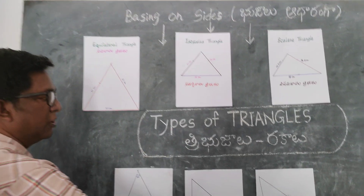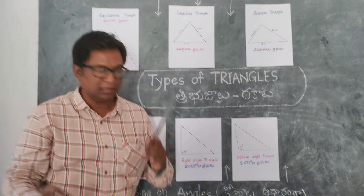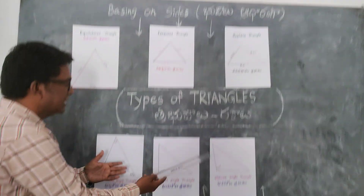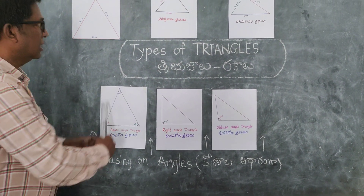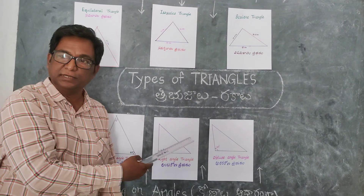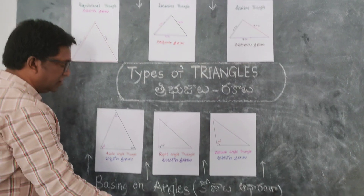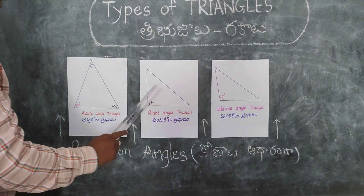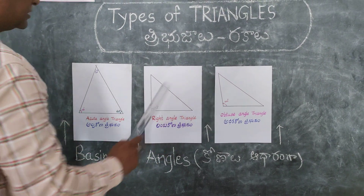Let's sing about the triangle, let's sing about the triangle. We sing on sides and angles, we sing on sides and angles. Triangles are different types, we sing on angles. Triangles are three types.